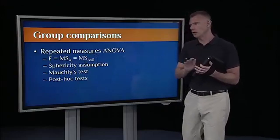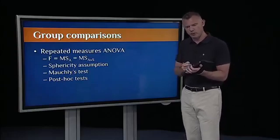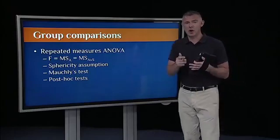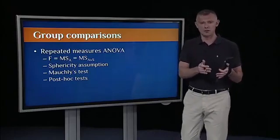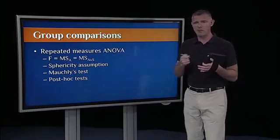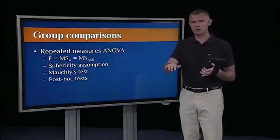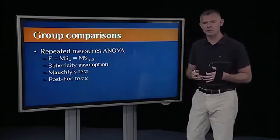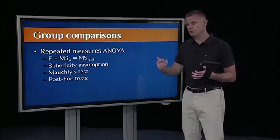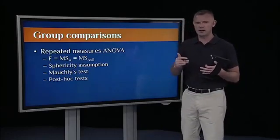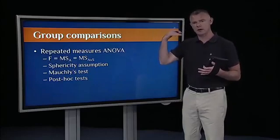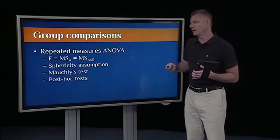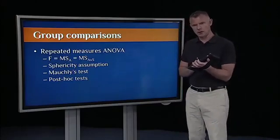We also had this extra assumption, this sphericity assumption, which is not just homogeneity of variance, but homogeneity of covariance. And we tested that with Mauchly's test. If it was significant, we used a correction like Greenhouse-Geisser. Again, we dealt with post-hoc tests, because if we do post-hoc tests, we have to protect against that possible inflation of the probability of type one error. Again, we did the Holm procedure, and then the Bonferroni procedure to deal with that.